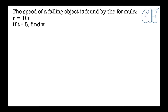That learning outcome might have sounded a little bit confusing, so I'm going to show you an example. Here is a question: the speed of a falling object is found by the formula v equals 10t. If t equals 5, find v. When I say substituting into formula, it means that you're going to put the numbers where the letters are.